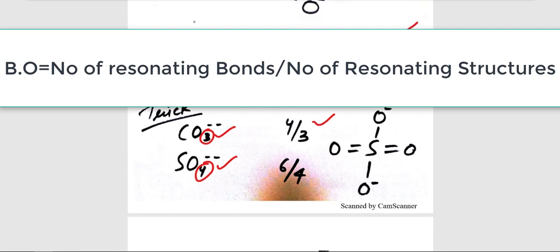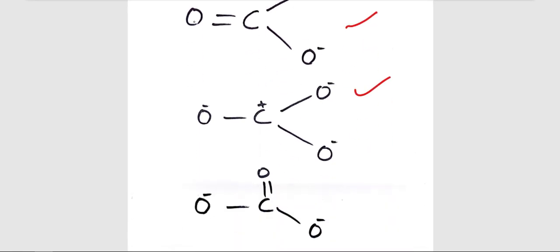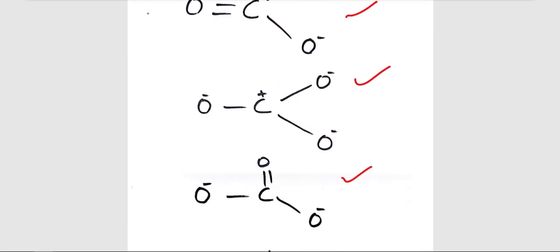Similarly, for SO4²⁻, the number of resonating bonds is 6 in this case, which we divide by 4 because 4 is there. And we get 6 by 4 as the answer. This is the number of resonating structures which CO3²⁻ have. And that's it.